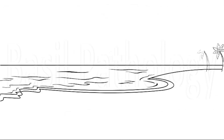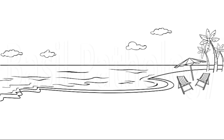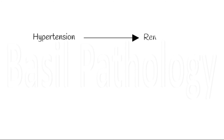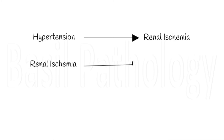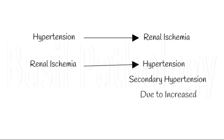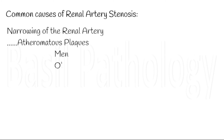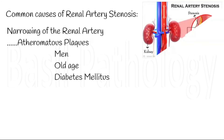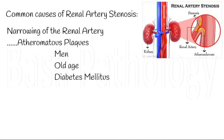Coming to the small and last topic of vascular diseases of the kidney: renal artery stenosis. We saw that primary hypertension leads to renal ischemia and renal failure. Vice versa, renal ischemia due to renal artery stenosis can also lead to hypertension. This is one example of secondary hypertension and it is due to increased renin production. The common cause of renal artery stenosis is narrowing of the renal artery due to atheromatous plaques, which is more common and affects men more than women at old age.